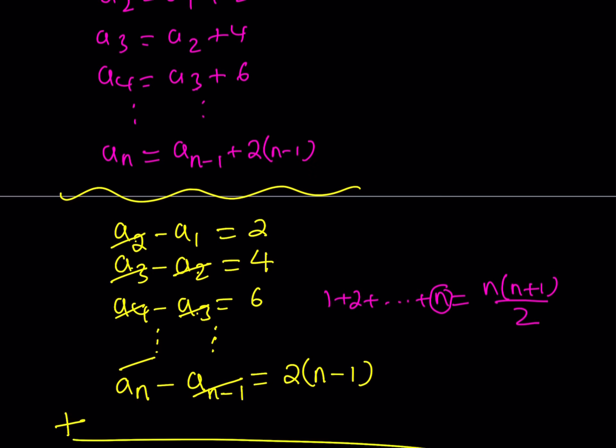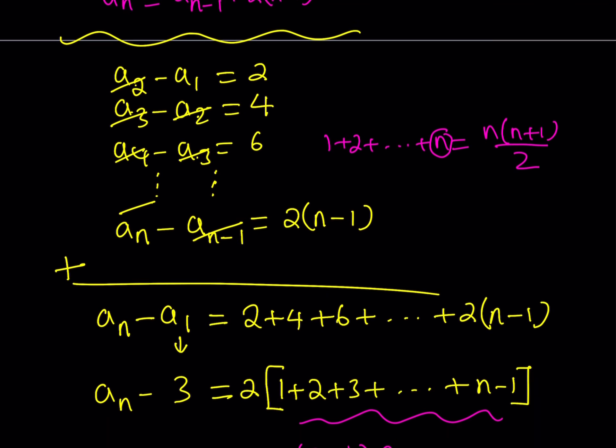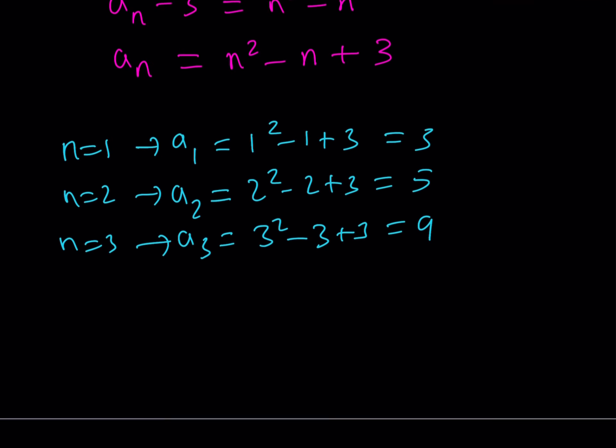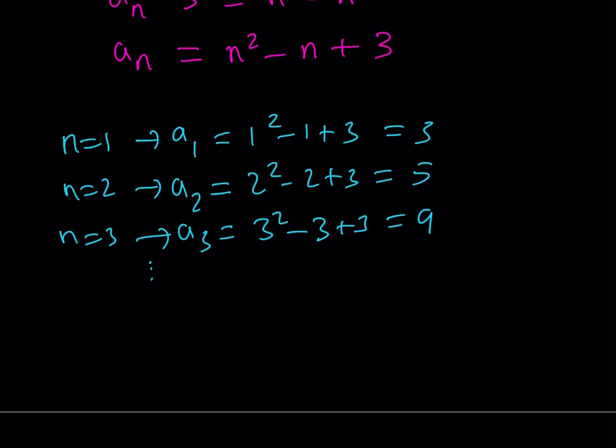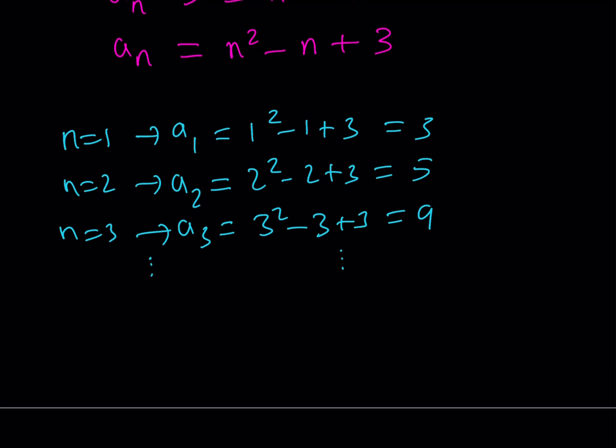And if you look at the first three terms of our sequence, 3, 5, 9, so on and so forth, it's going to give us the same thing. Well, this is not just a proof. It's just verifying that our formula actually works. And obviously you can find any term since you have the formula for the nth term of this sequence.